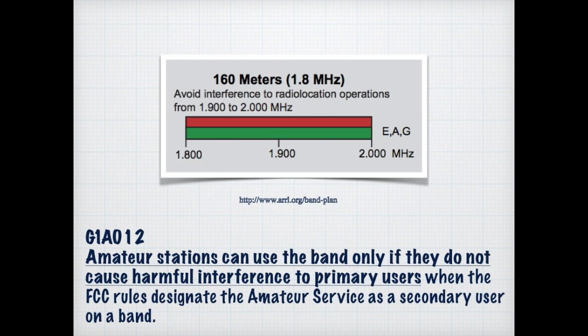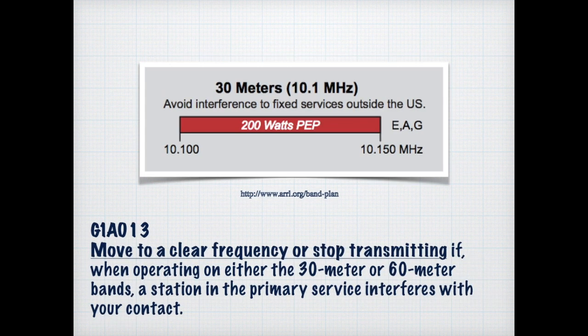For all the Star Trek fans, you know the prime directive that the Federation has. Well, the FCC gives us a prime directive: we should not interfere with the primary users of a particular band. This is particularly true in Europe where some of the bands are actually used for radio broadcast and shortwave. As secondary users, we have to yield to the primary users — if the primary user is causing interference with our contact, it's up to us to move.